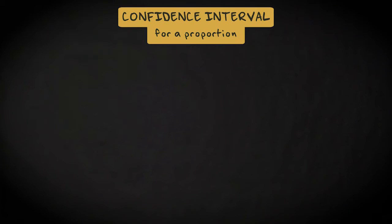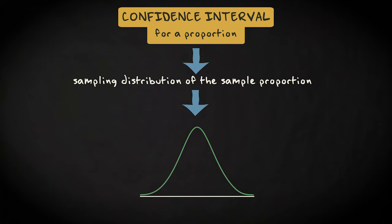When we construct a confidence interval for a proportion, we employ the sampling distribution of the sample proportion. We know that, as long as a sample is large enough, this sampling distribution is normally distributed with a mean that is equal to the population proportion pi and a standard deviation that is equal to the square root of pi multiplied with 1 minus pi divided by n.